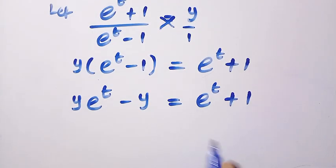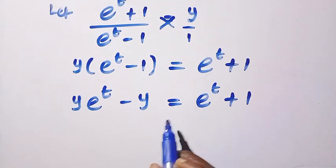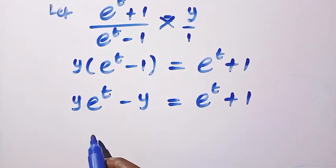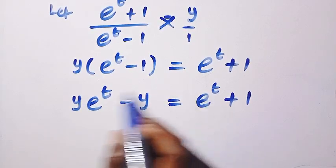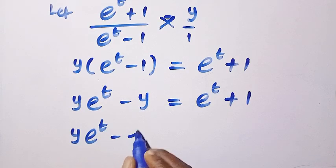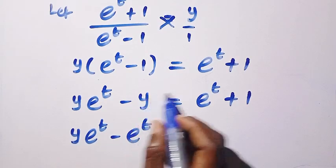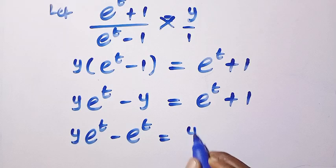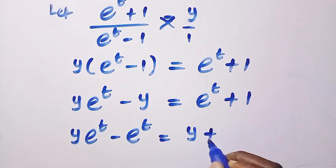Then let's collect the like terms. Here is e^t, this is also e^t. By transferring e^t to this side, we have ye^t - e^t. And let's take y to the other side as well, we have y + 1.